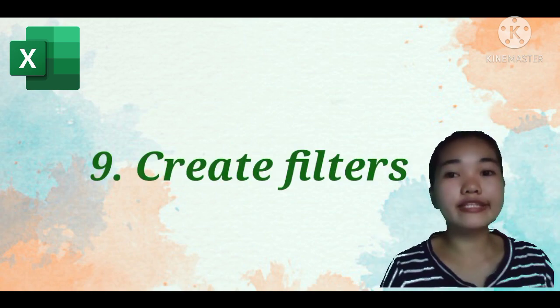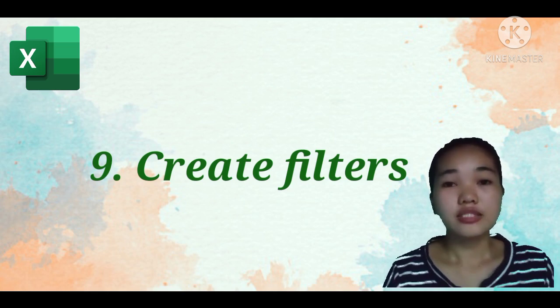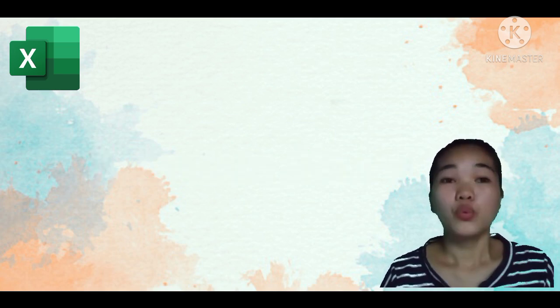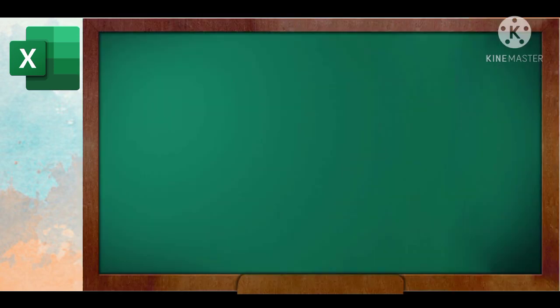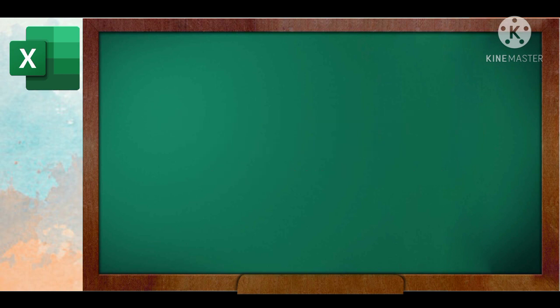Number nine, we have create filters. There are several ways to filter data in Google Sheets. With the filter formula, filters, and the filter view function, you can sort your data numerically or alphabetically. Select cells you want to sort.